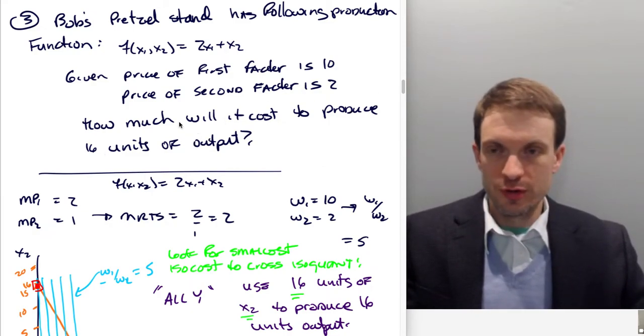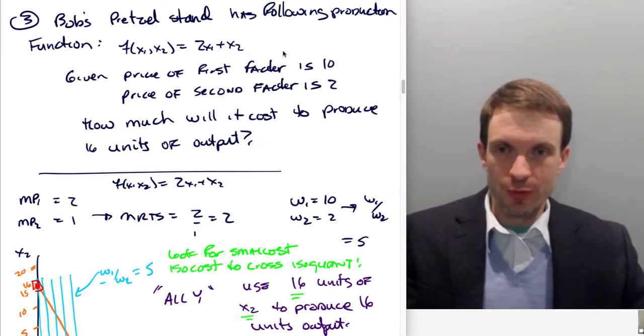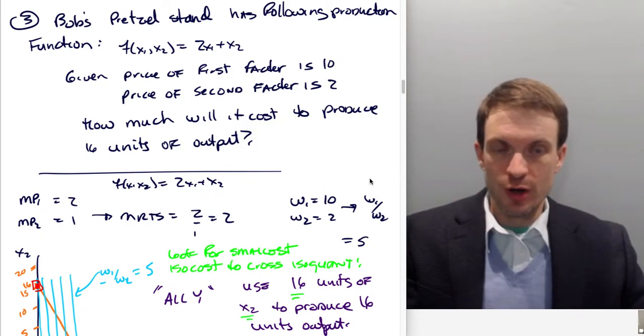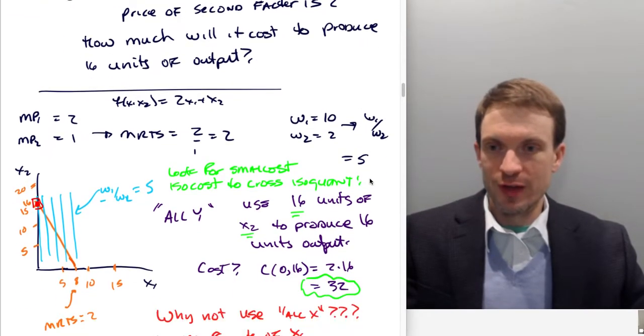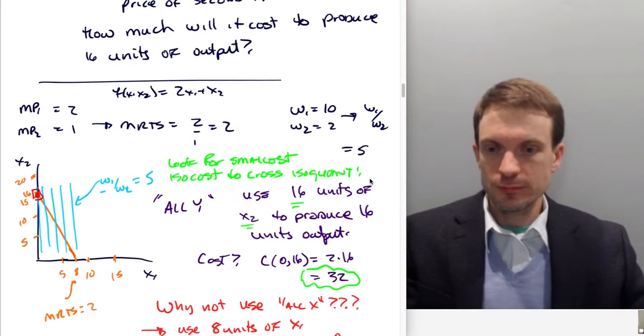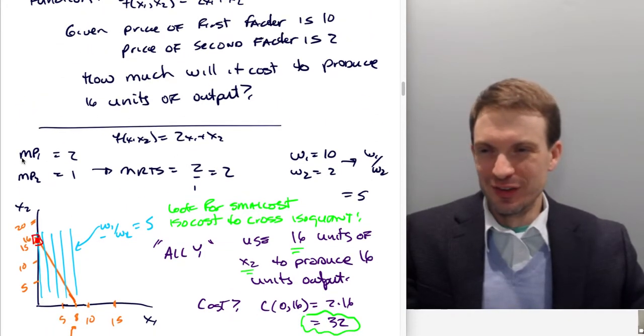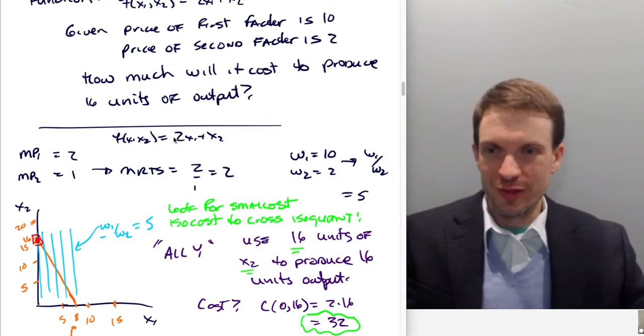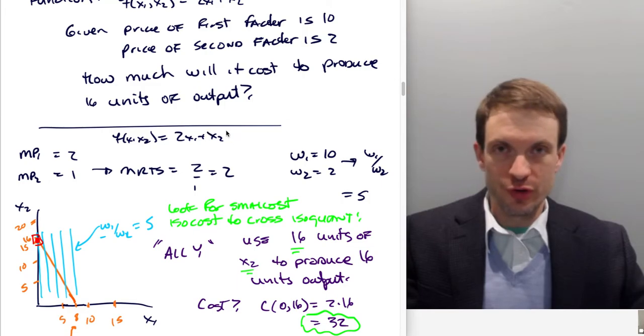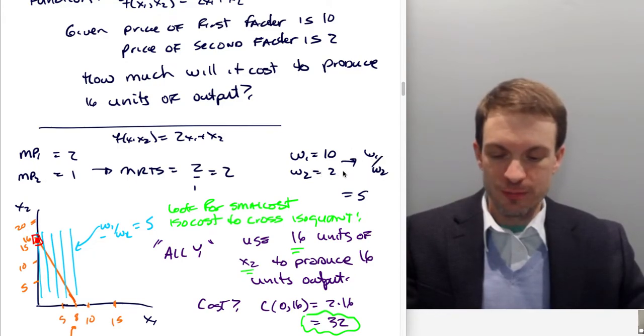So the first thing we want to do is we want to get the ratio of marginal products, that's our MRTS, and we want to get our ratio of factor prices, omega 1 divided by omega 2. So MP1 is 2, that's just the derivative with respect to x1. MP2 is 1, that's just the derivative with respect to x2. Our input prices, we had 10 and 2, so the ratio of factor prices is just 5.